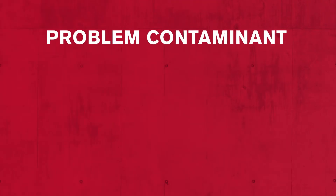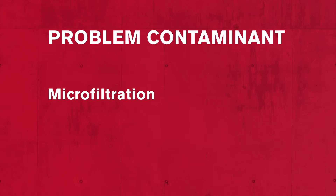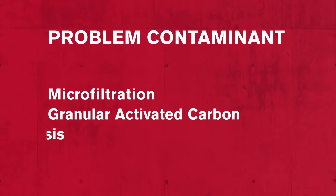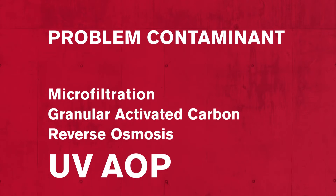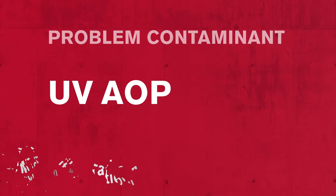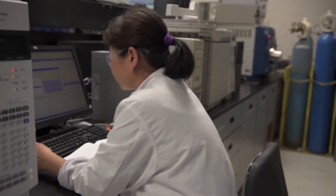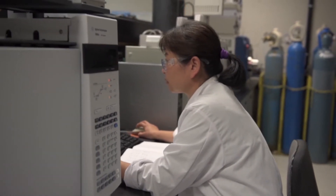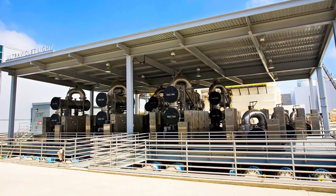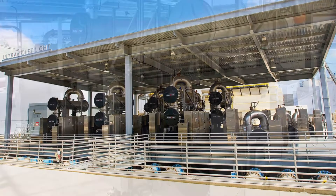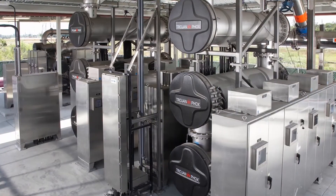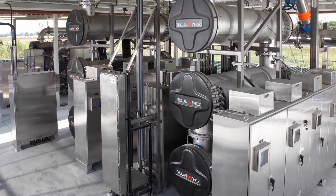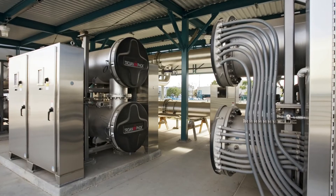If you have a problem contaminant that cannot easily be removed with processes like microfiltration, granular activated carbon, or reverse osmosis, then UV-AOP might just be the ideal solution. Our renowned team of scientists and researchers have analyzed thousands of water samples from around the world, and our industry-defining UV-AOP systems have been installed at treatment plants from California to Australia to treat a wide array of contaminants,